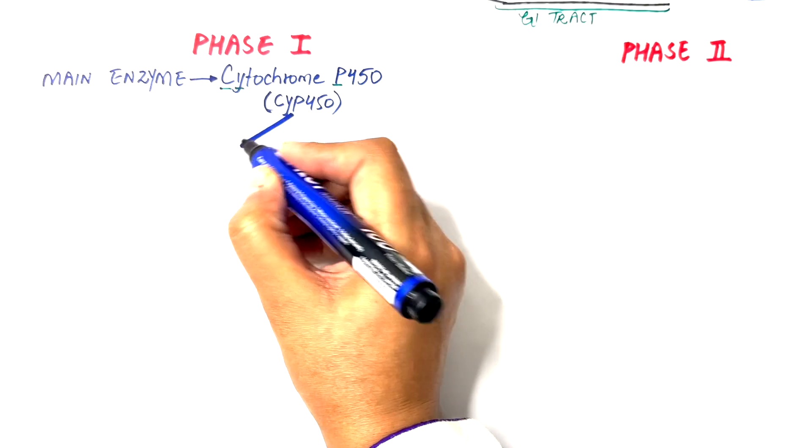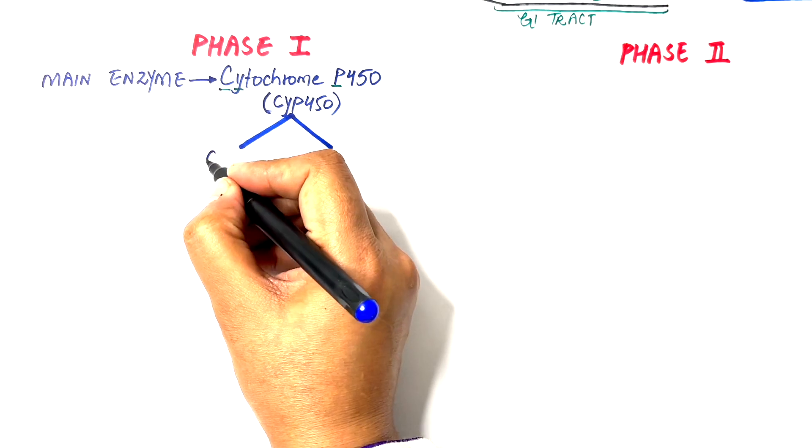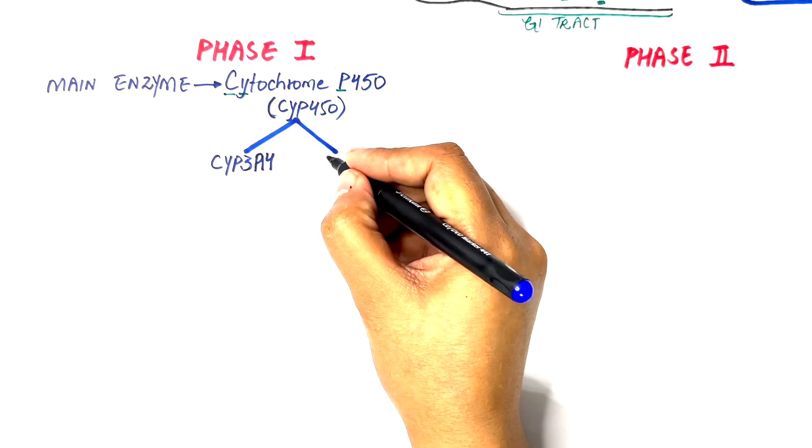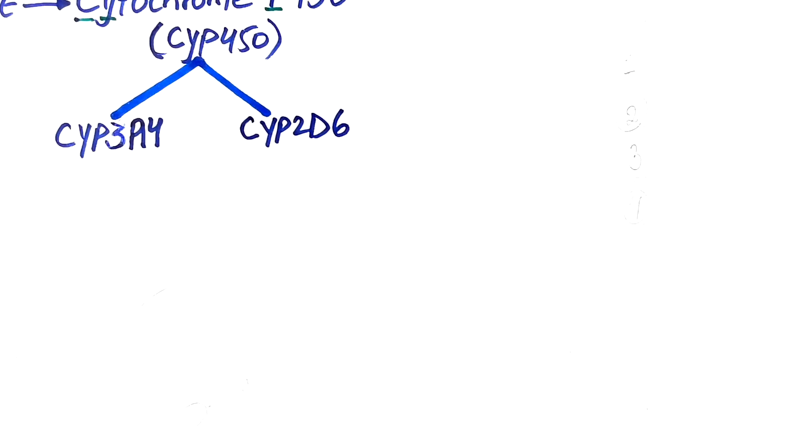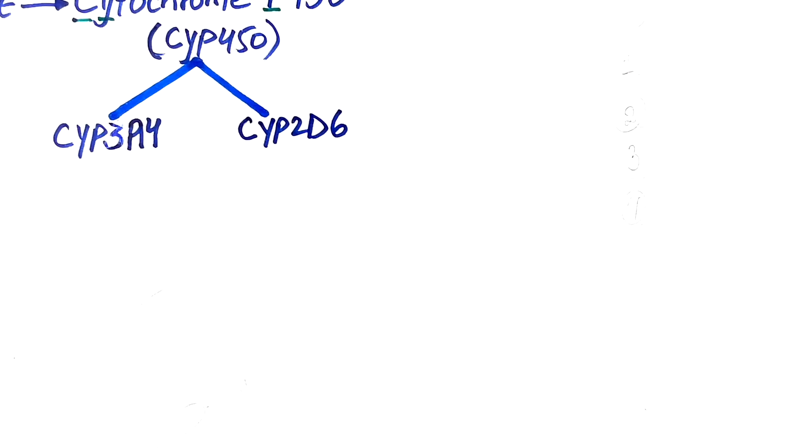This large family of enzymes has so many subtypes, the most important of which involved in metabolism of many drugs are the CYP3A4 and the CYP2D6 enzymes.